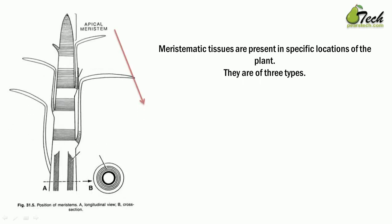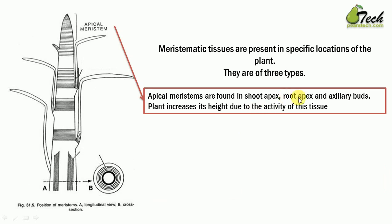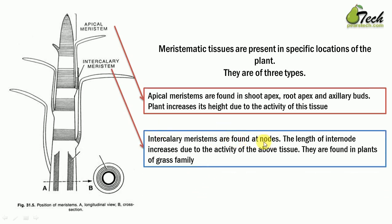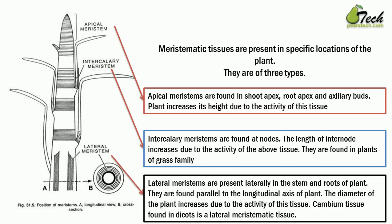In detail: apical meristems are found in shoot apex, root apex, and axillary buds; the plant increases its height due to this tissue. Intercalary meristems are found at nodes; the length of internodes increases due to this tissue, and they are found in plants of the grass family. Lateral meristems are present laterally in the stem and roots, parallel to the longitudinal axis; the diameter of the plant increases due to this tissue. Cambium tissue found in dicots is a lateral meristem tissue.